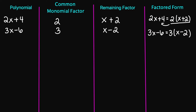And remember, you can always check your answer by multiplying to see if it takes you back to your original problem. So if I multiply 3 times x, I'm going to get 3x, and then 3 times negative 2 is going to give me negative 6. So it takes us back to our original problem, and we know our factored form is correct.